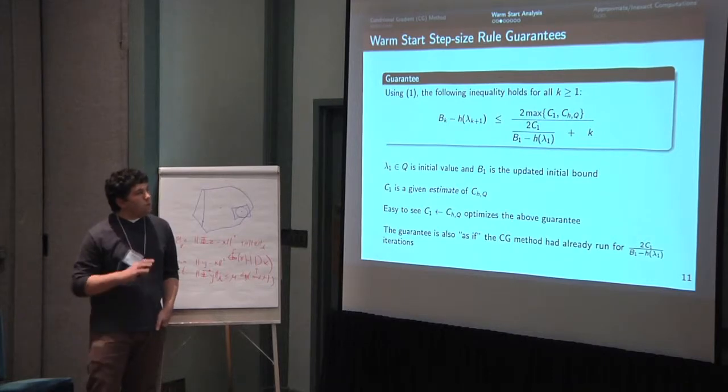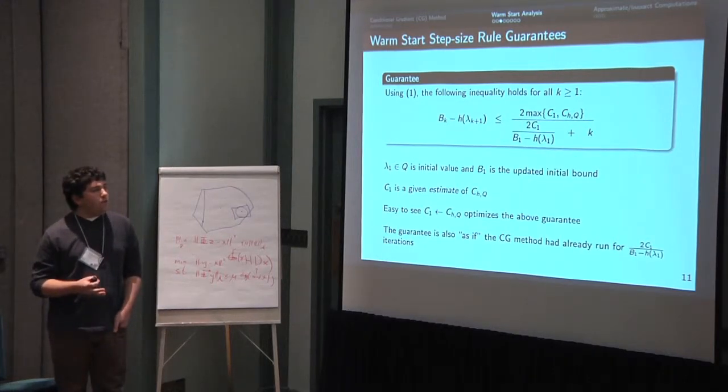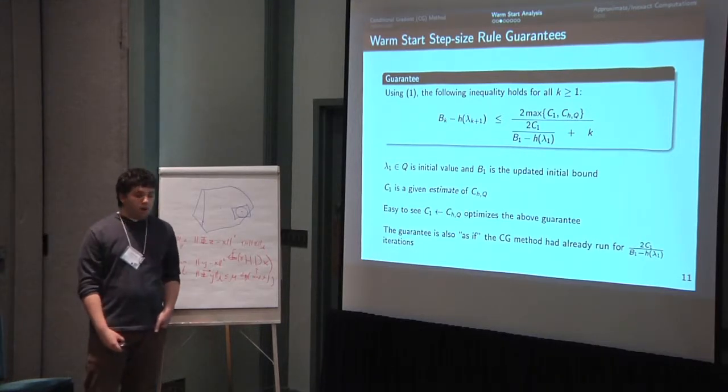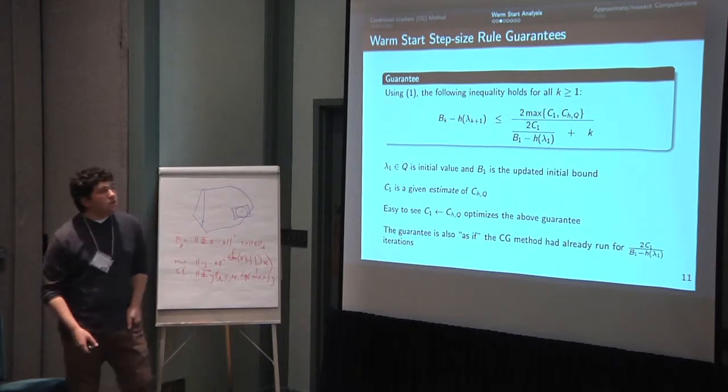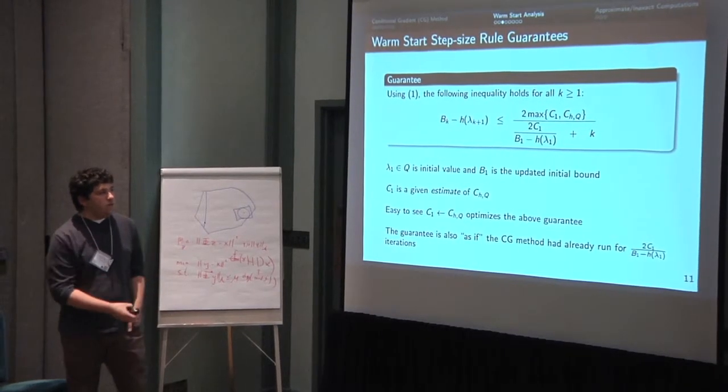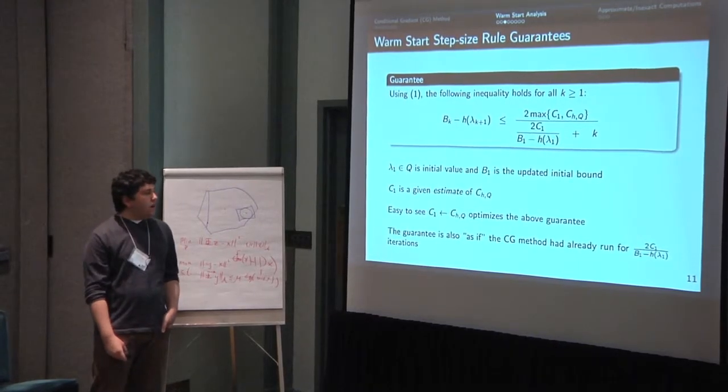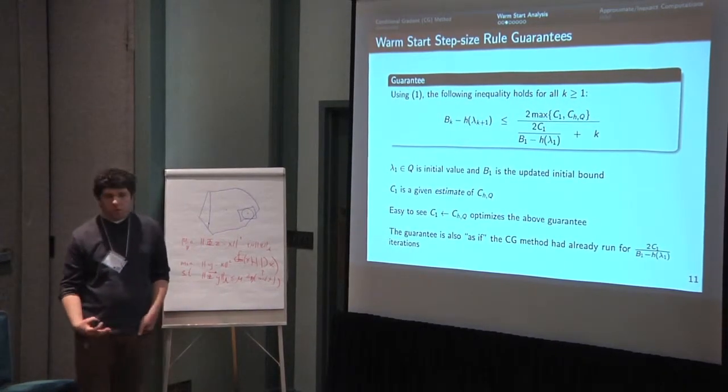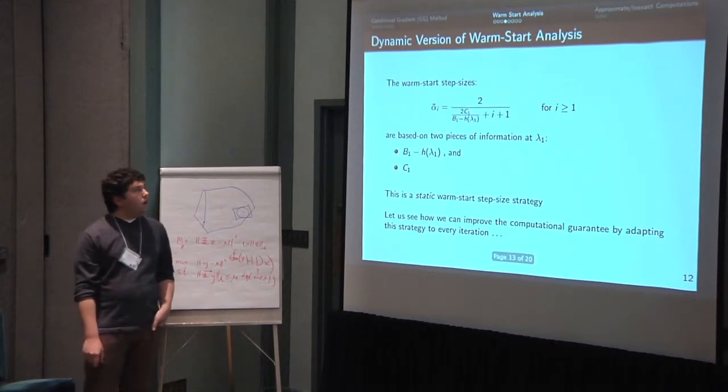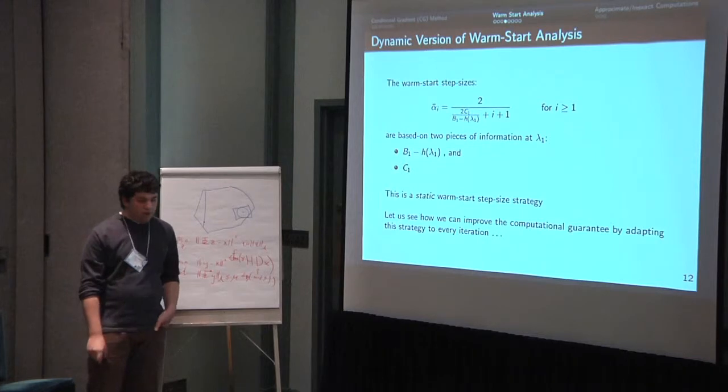So anyway, the guarantee that we get for this warm-started step size is basically an analogous guarantee to the 2 over i plus 2 step size, but again with the warm start property that now this denominator has this ratio plus k. And so it's kind of also as if we had already been running for this certain number of iterations.